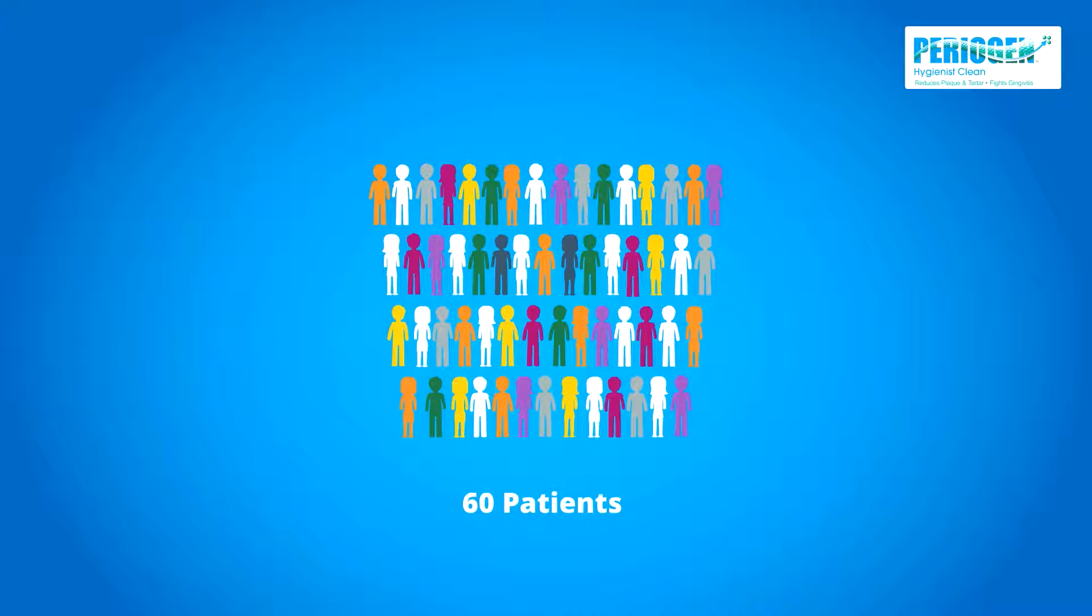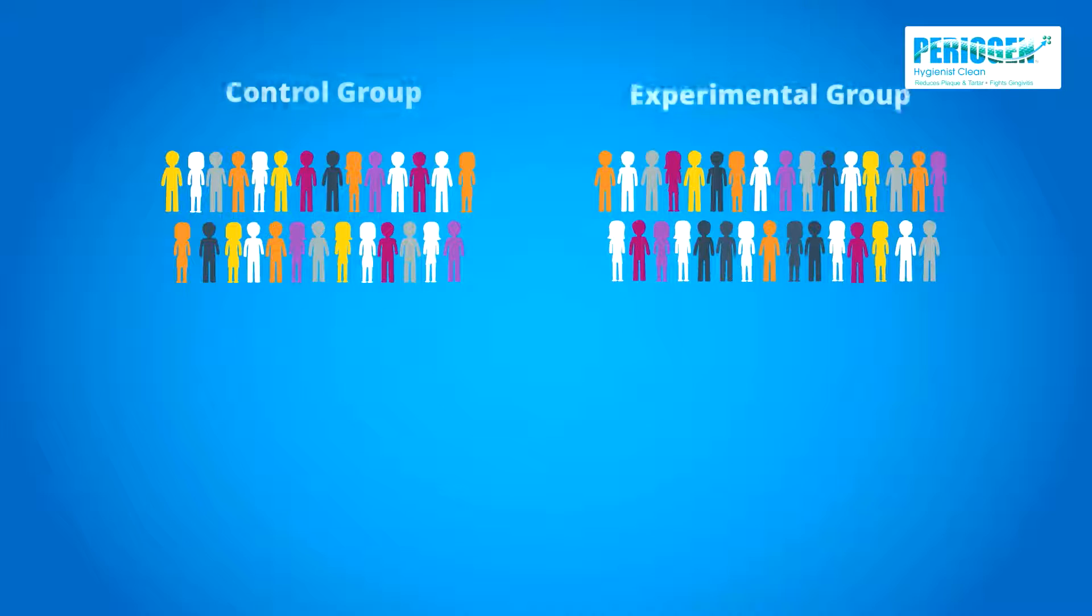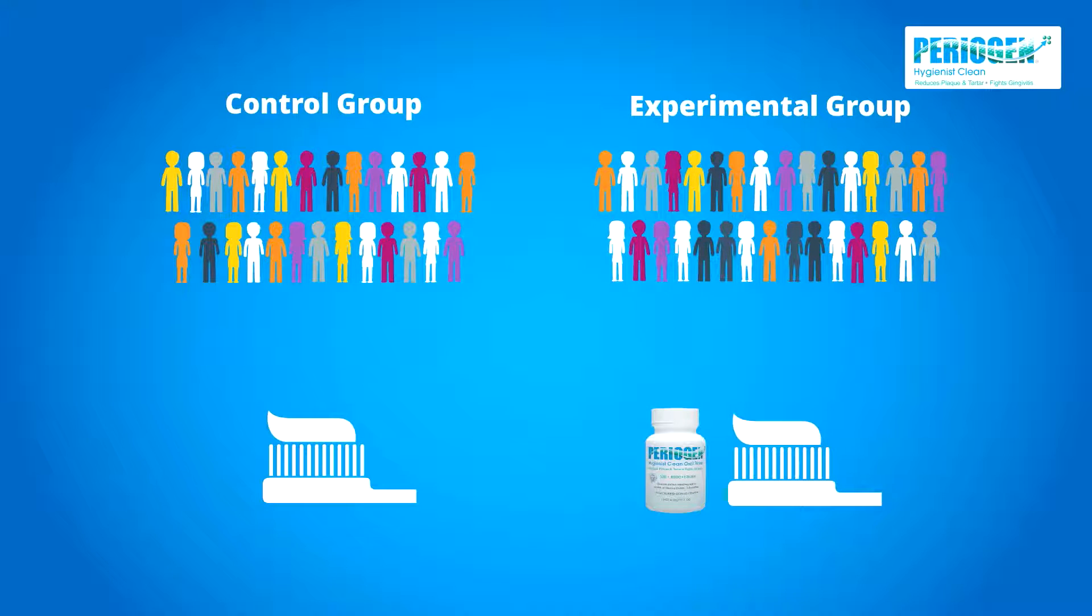After undergoing a dental prophylaxis, 60 gingivitis subjects with a moderate rate of calculus formation were stratified and randomly assigned to one of two groups: a control group (toothbrushing alone), and an experimental group (toothbrushing with periogen oral rinse).